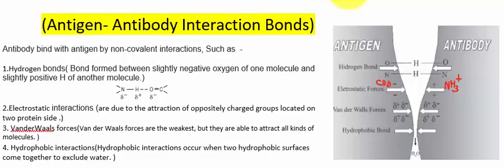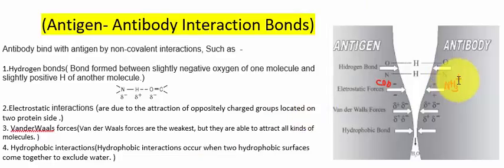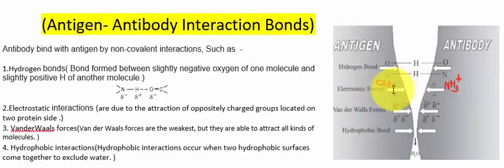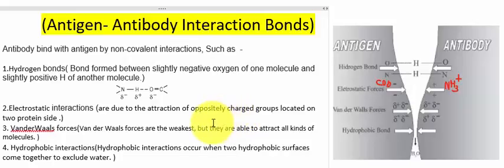Proteins are the sequence of amino acids. The amino acid consists of one amino group and one carboxylic group. The carboxylic group contains a negative charge and the amino group contains a positive charge. Due to this difference in charge, they are oppositely attracted and they interact by electrostatic interactions.